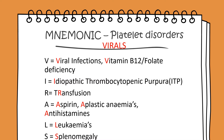To identify disorders that lead to platelet issues, we use the mnemonic VIRALS: V equals viral infections; V equals vitamin B12 and folate deficiencies; I equals idiopathic thrombocytopenic purpura (ITP); R equals transfusion (R is the second letter in transfusions); A equals aspirin; A equals aplastic anaemia; A equals antihistamines. Aspirin and antihistamines are acquired platelet disorders causing platelets not to work properly. Also included are leukaemia and splenomegaly.